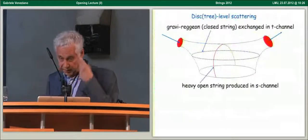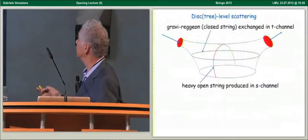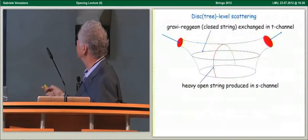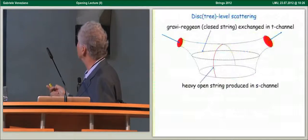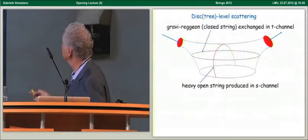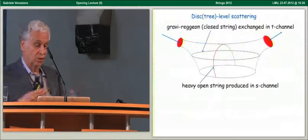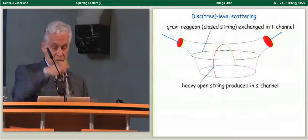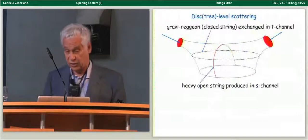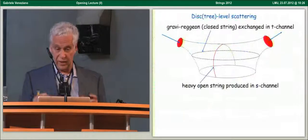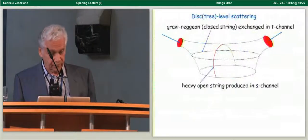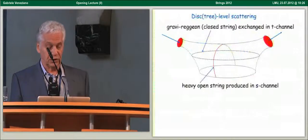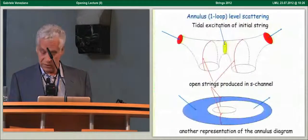This is another picture of the process. Here you have the incoming string, which goes in and out, and then this is a graviton, or closed strings exchanged in the T-channel, and the process can also produce open strings whose ends are attached to the d-branes, so it can be a conversion of the kinetic energy of the incoming closed string conversion into a very massive open string.